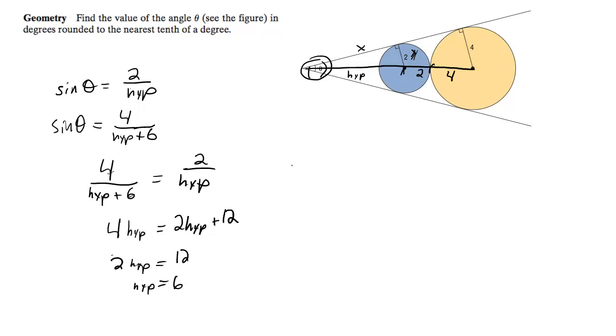Alright, so we go ahead and solve this, so I'm going to plug this into the first equation, so sine of theta is equal to 2 over 6, or 1 third, so then theta is equal to inverse sine of 1 third, which gives me...